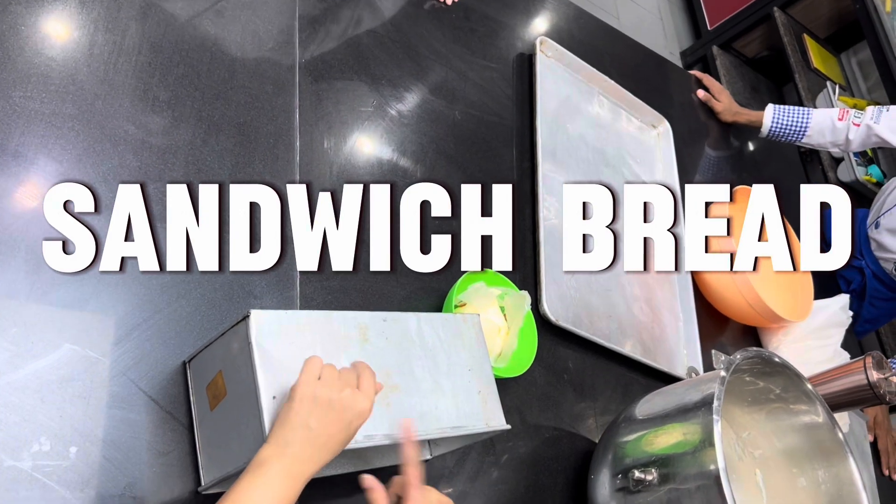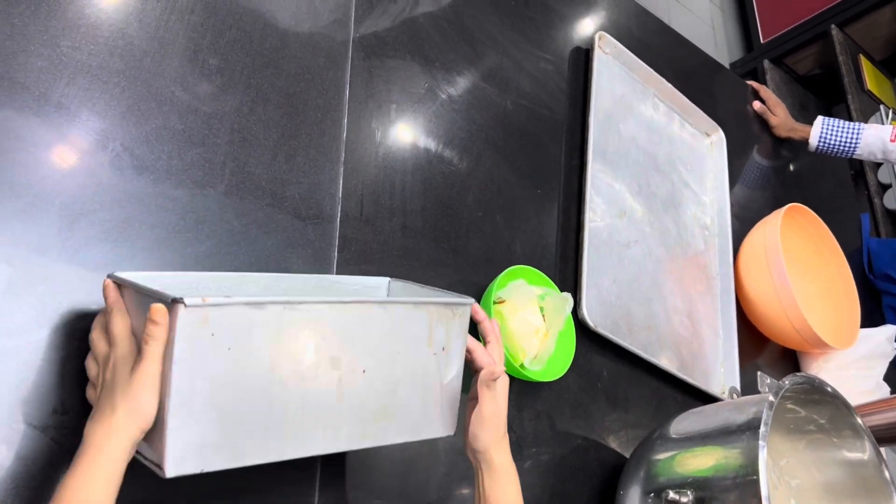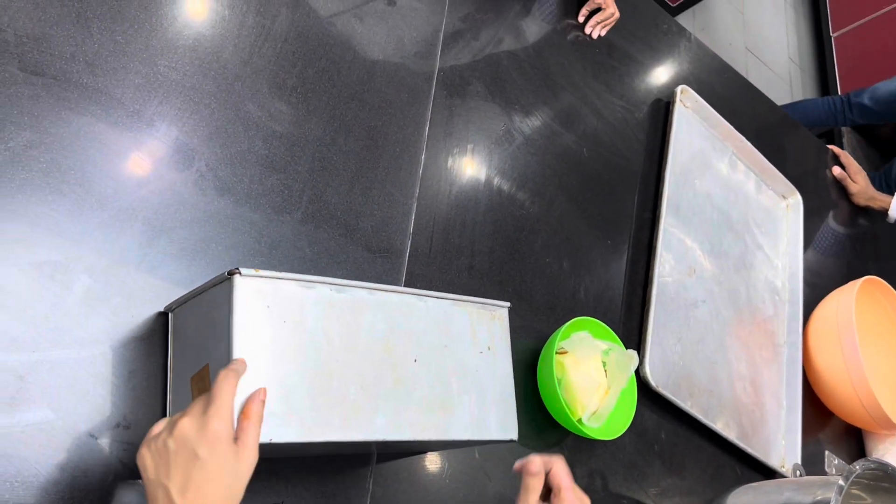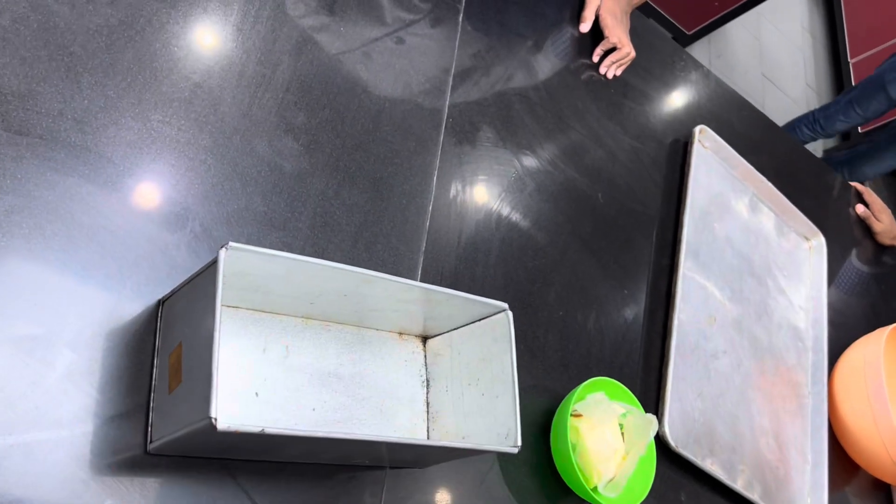The shawarma bread is round buns. We should make sandwich bread for you. This is the whole bowl of the bread. This is the whole bowl of the bread, it comes to 1200 grams.